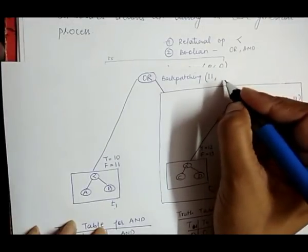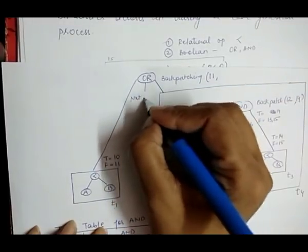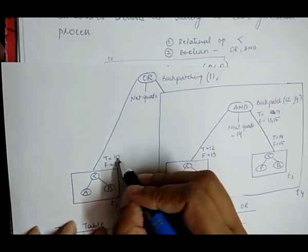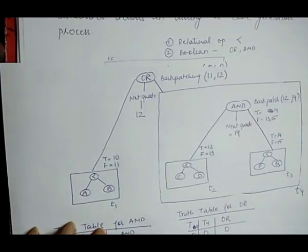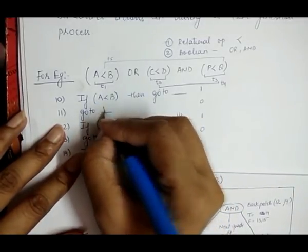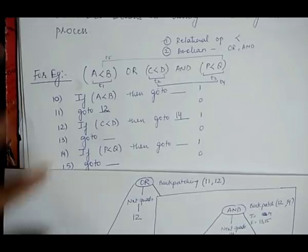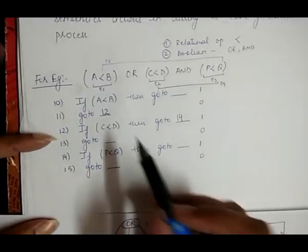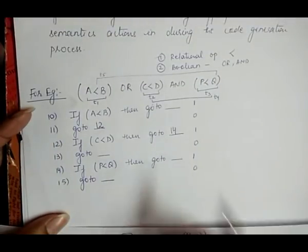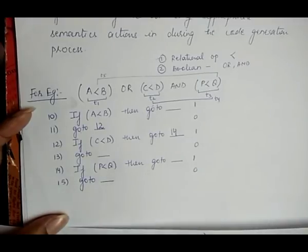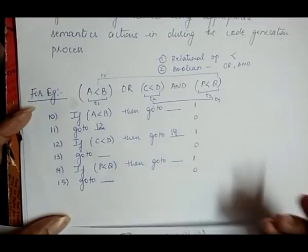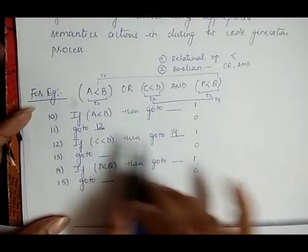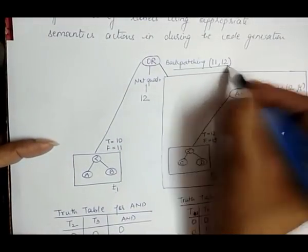So the backpatching here is represented as backpatch(11, 12). The first field is 11 because t1's false value is on line 11. The second field is 12 because after line 10 and 11, the next quadruple is line 12. This means on line 11, the goto directly goes to line number 12. Backpatching only fills the labels that are necessary; remaining blank fields are not filled.